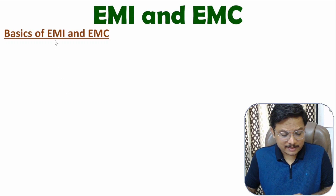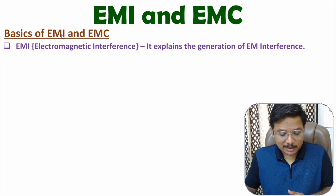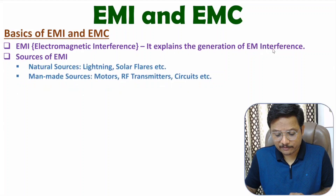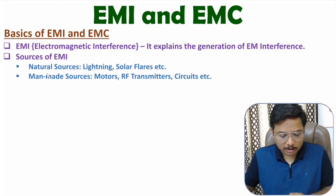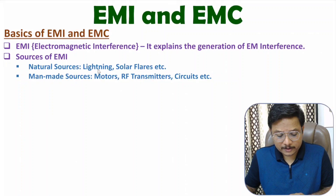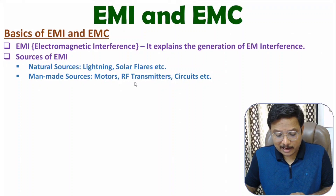EMI means electromagnetic interference. It explains generation of electromagnetic interference. Sources of EMI could be natural sources or manmade sources. Natural sources could be lightning or solar flares. Manmade sources could be motors, RF transmitters, or RF circuits.